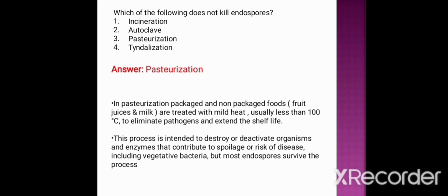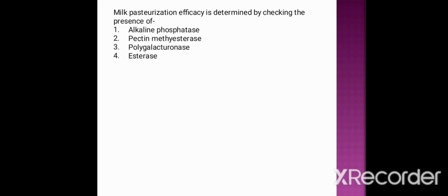In pasteurization, packaged or non-packaged foods — for example, fruit juice and milk — are treated with mild heat, usually less than 100 degrees centigrade, to eliminate pathogens and extend shelf life. This low temperature is not enough to kill endospores. The process is intended to destroy or deactivate microorganisms and enzymes that contribute to spoilage or risk of disease, including vegetative bacteria, but most endospores survive the process.